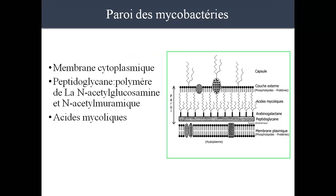On sait que la paroi bactérienne, comme vous le voyez sur le schéma, elle est composée de ce qu'on appelle du peptidoglycane. Toutes les bactéries possèdent une paroi, exception faite pour les genres un peu particuliers comme les mycoplasmes, qui ne possèdent pas de paroi. La paroi bactérienne est un élément constitutif obligatoire. Ce qui caractérise les mycobactéries par rapport aux autres groupes bactériens, c'est que dans leur paroi, ils possèdent, en plus du peptidoglycane et de l'arabinogalactone, une couche épaisse de ce qu'on appelle les acides mycoliques, de nature lipidique, qui permet à la bactérie d'avoir ce caractère acide-alcool résistant.